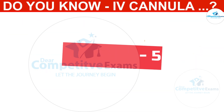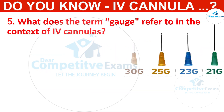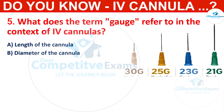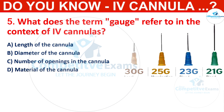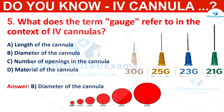Q5. What does the term gauge refer to in the context of IV cannulas? Options: length of the cannula, diameter of the cannula, number of openings in the cannula, or material of the cannula. The correct answer is diameter of the cannula. The gauge of an IV cannula indicates the diameter of the needle; a lower gauge number corresponds to a larger diameter.